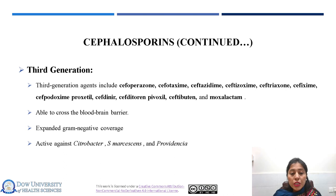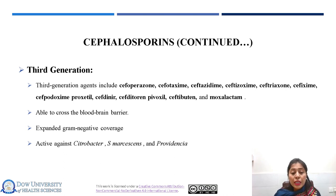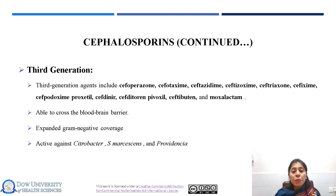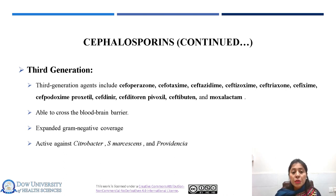The third generation cephalosporins include many agents such as cefotaxime, ceftazidime, and others. The unique feature of the third generation is that they can cross the blood-brain barrier. Compared with the second generation, they have expanded gram-negative coverage and are able to cross the blood-brain barrier, unlike the first and second generations. However, resistance can emerge during treatment, as organisms like Citrobacter and Serratia marcescens can produce cephalosporinase and acquire resistance against the third generation cephalosporins.